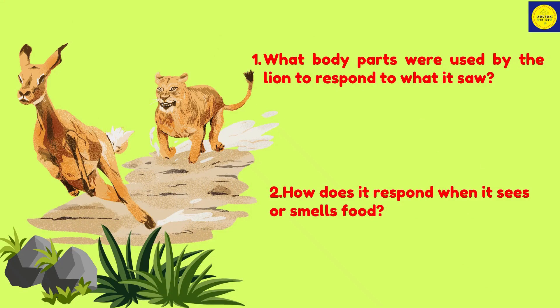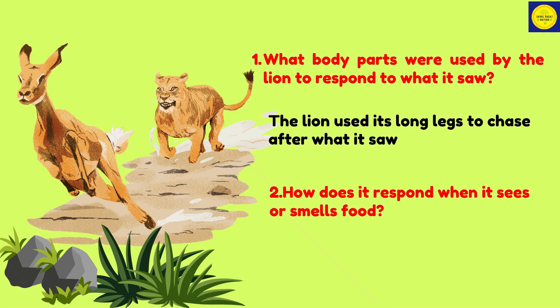In this picture, what body parts were used by the lion to respond to what it saw? Answer: the lion used its long legs to chase after what it saw. Question 2: How does it respond when it sees or smells food? Answer: it moves towards the food source.